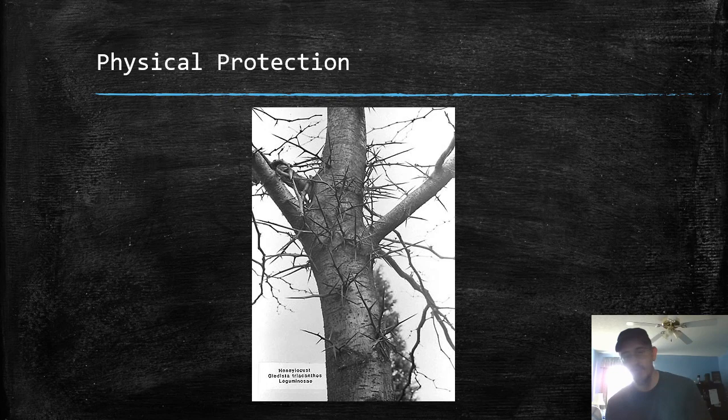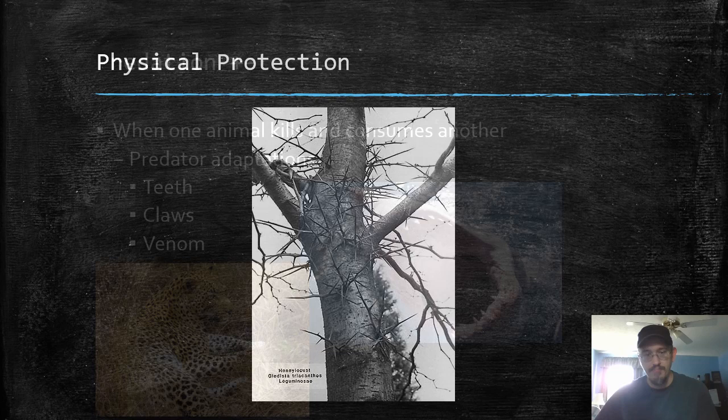Plants also have physical protection. Thorns and spines are things that ward off critters. This is a honey locust tree found here in Arkansas and other places — it has these giant thorns on its bark. Probably these evolved in the ice age to protect it from things like giant sloths from eating the bean pods that grow on its branches.